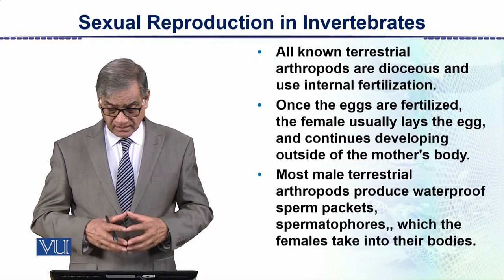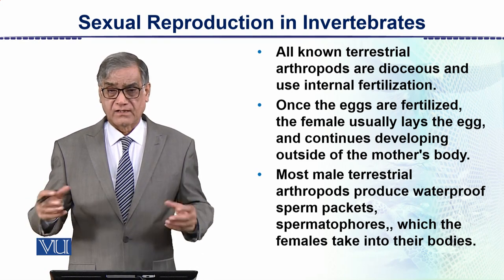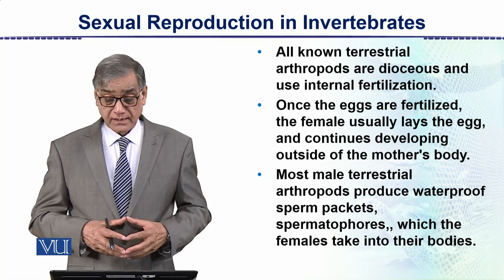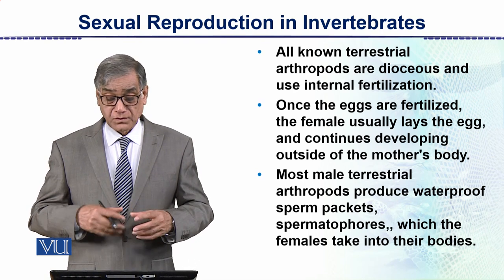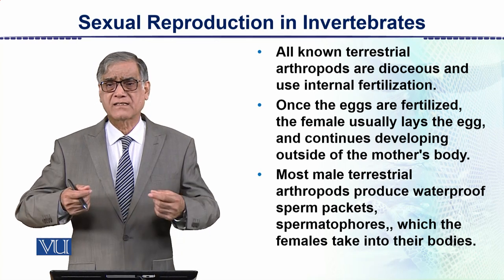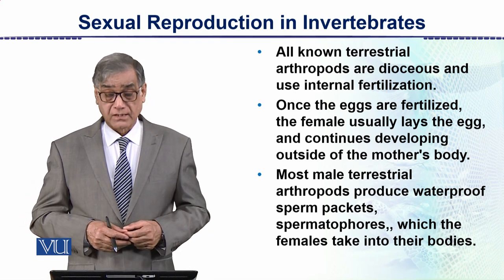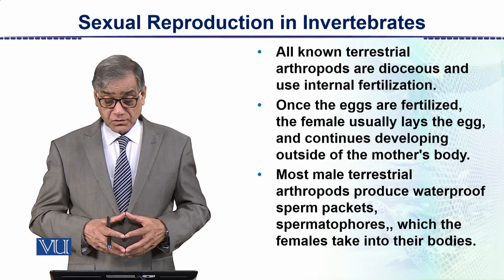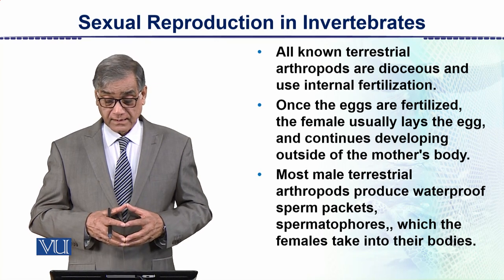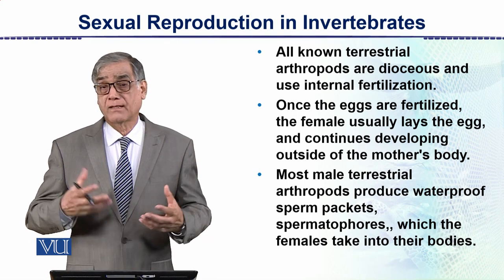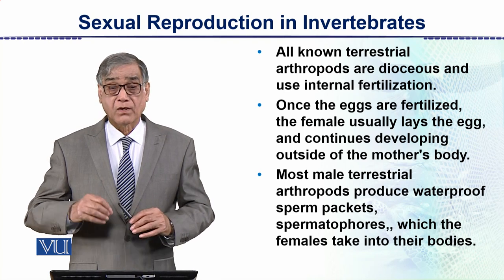All known terrestrial arthropods are dioecious, meaning they have different sexes in different individuals, and they use internal fertilization. Once the eggs are fertilized, the female usually lays the eggs and they continue developing outside the mother's body. Most male terrestrial arthropods produce waterproof sperm packets called spermatophores, which females take into their bodies to fertilize the eggs.